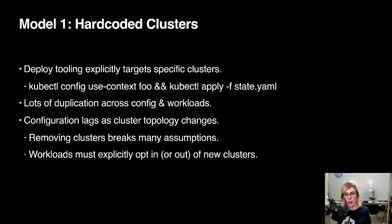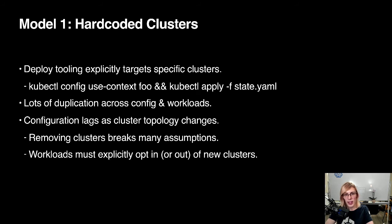The first model, the starting place, is hard-coded clusters. We explicitly have some kind of deploy config that says this workload goes to this cluster — like a Jenkins pipeline where each stage uses one kubectl context to apply to something. We wind up with a fair bit of duplication as services increase because we have to specify in each one how they map out. We have configuration lag as cluster topology changes: as we add a new cluster, we have to opt new services into it; if we shuffle things around we have to change what workloads point where; if we remove a cluster, we have to update all those deploy pipelines.